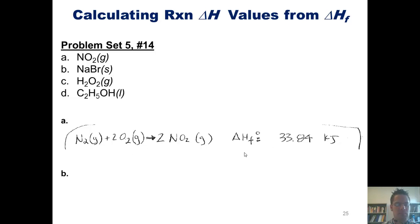Let's take a look at B, sodium bromide. You'll note that if we look this process up in the back of our text, it gives us a ΔH of formation of negative 361.4 kJ.